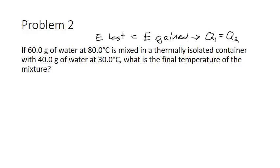Another common problem type: if you have 60 grams of water at 80 degrees Celsius mixed in an isolated container with 40 grams of water at 30 degrees Celsius, what is the final temperature after mixing? This type of problem is a little different — some energy is lost in one part and gained in another. The 60 grams at 80 degrees Celsius is going to lose energy.